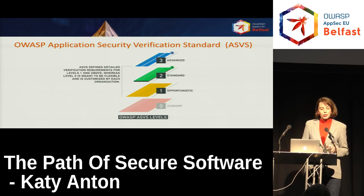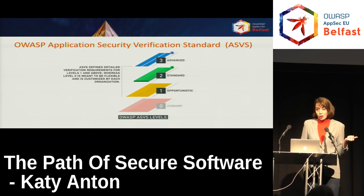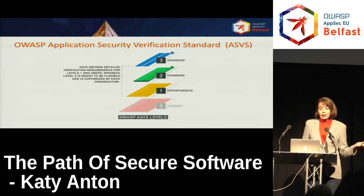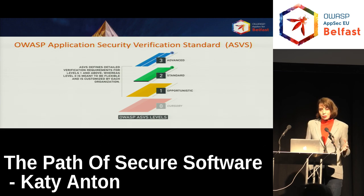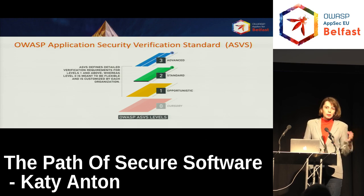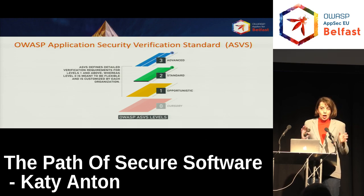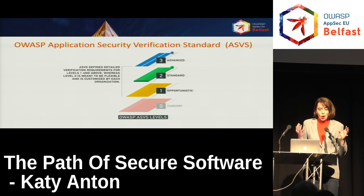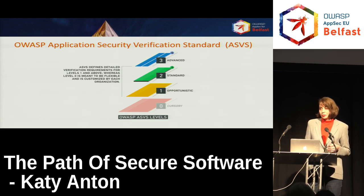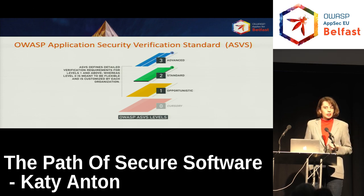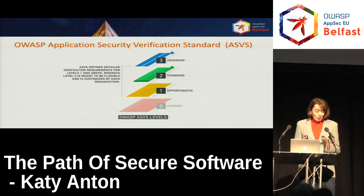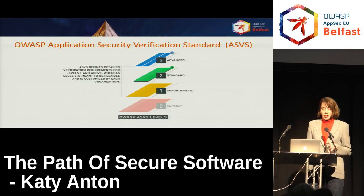ASVS helps you choose the appropriate level of security for your application. Level one is the minimum — every application should be verified at level one. Level two is for applications where a data breach would be embarrassing and create a mess, but not the end of the world. Level three is for critical applications where a data breach would have serious financial consequences — those must be verified at level three.